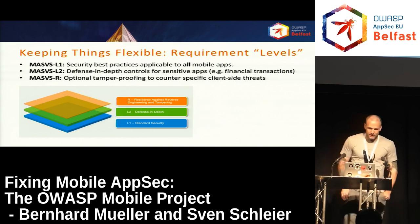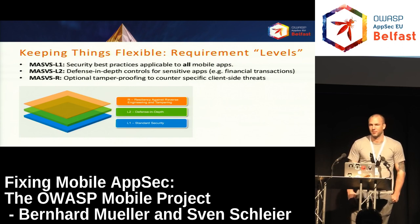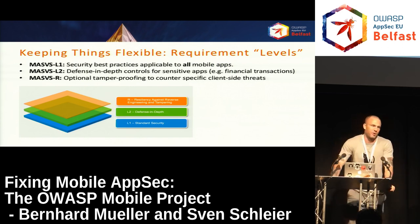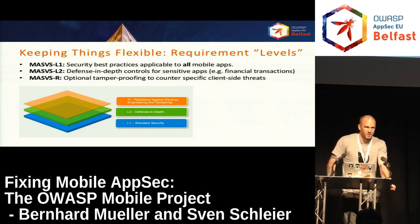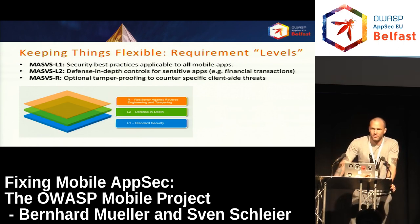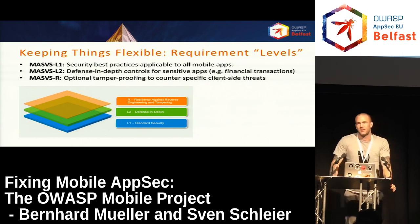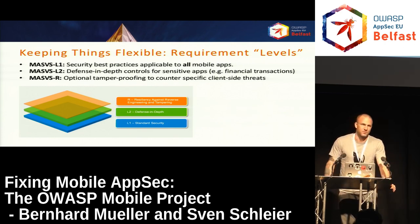MASVS-R covers tamper proofing and client-side protections, and this is completely optional — we recommend only using this in very particular cases. This covers things like how to detect root, protect against code injection, and frameworks like Xposed and so on.